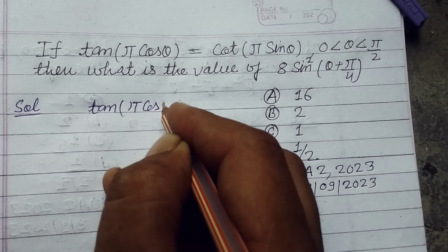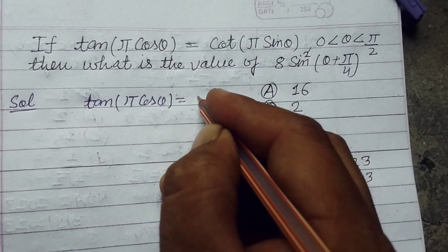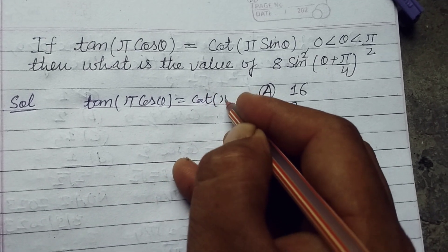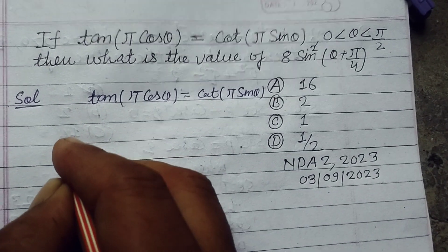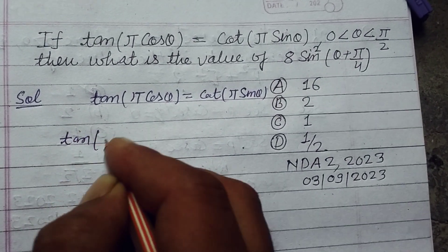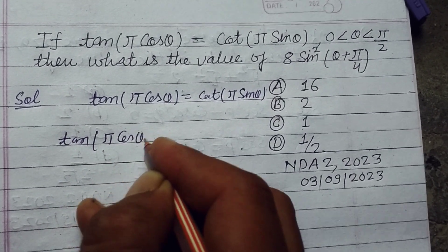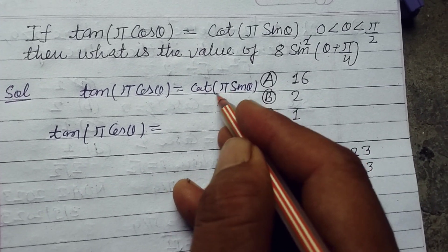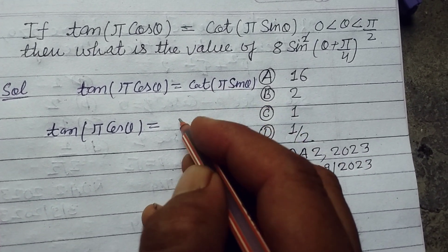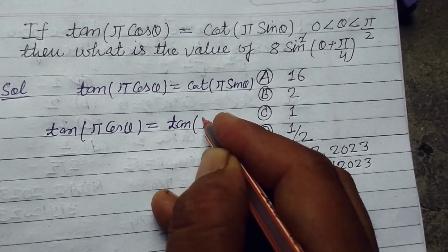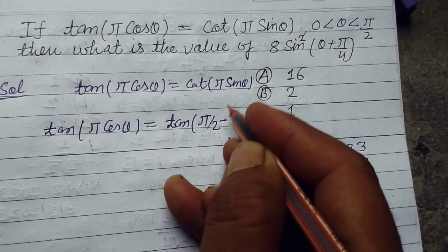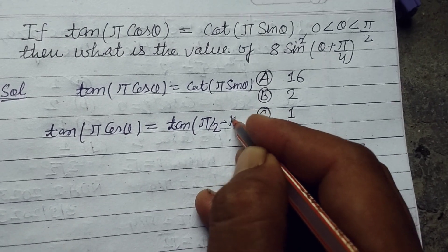So student, here we have tan(π cos θ) = cot(π sin θ). We write tan(π cos θ) = tan(π/2 - π sin θ), because cot θ equals tan(π/2 - θ).